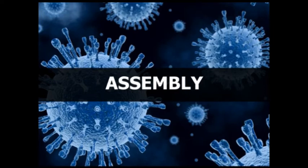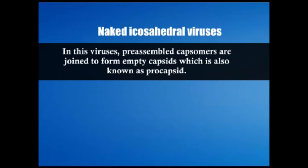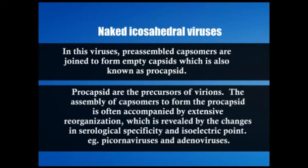Assembly involves bringing together newly formed viral nucleic acid and structural proteins to form the nucleocapsid. Three strategies are employed. In naked icosahedral viruses, pre-assembled capsomeres join to form empty capsids called procapsids, which are precursors of the virion. Assembly of capsid into procapsid is accompanied by extensive reorganization revealed by changes in serological specificity and isoelectric point — examples include picornaviruses and adenoviruses.